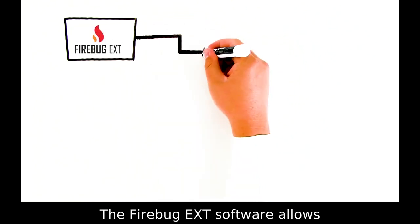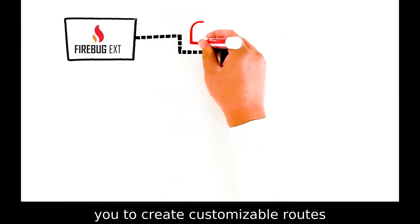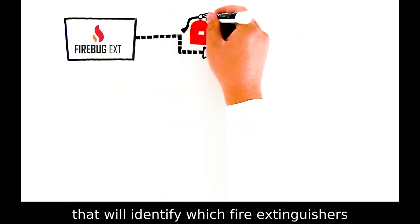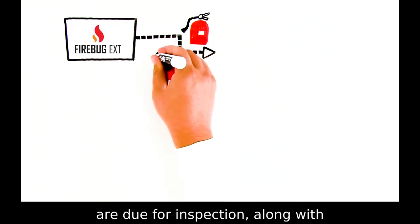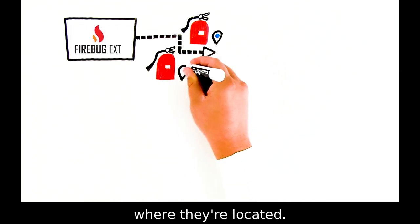The Firebug EXT software allows you to create customizable routes that will identify which fire extinguishers are due for inspection along with where they're located.